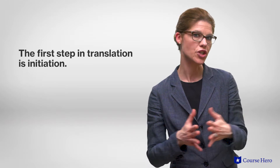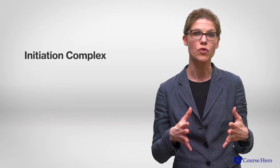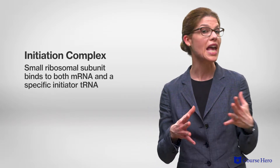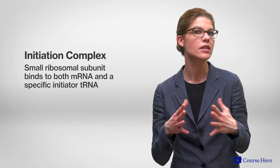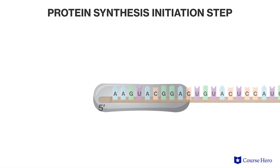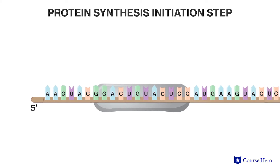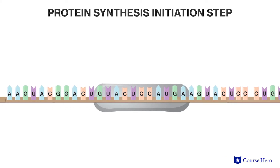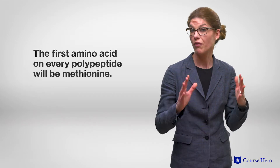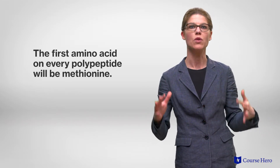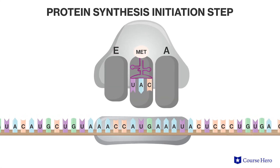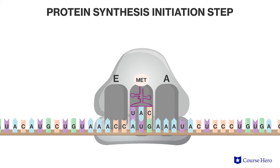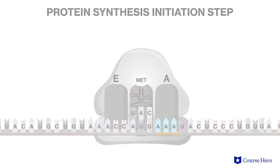The first step is called initiation. An initiation complex is formed when the small ribosomal subunit binds to both mRNA and a specific initiator tRNA. The five-prime cap of the mRNA binds to the small subunit, which then moves along the mRNA until it reaches the start codon. This happens every time mRNA gets translated, so the first amino acid on every polypeptide chain will be methionine. Once this happens, the large subunit of the ribosome joins the complex, aligning the A site of the ribosome with the second mRNA codon. The initiator tRNA sits in the P site of the ribosome.